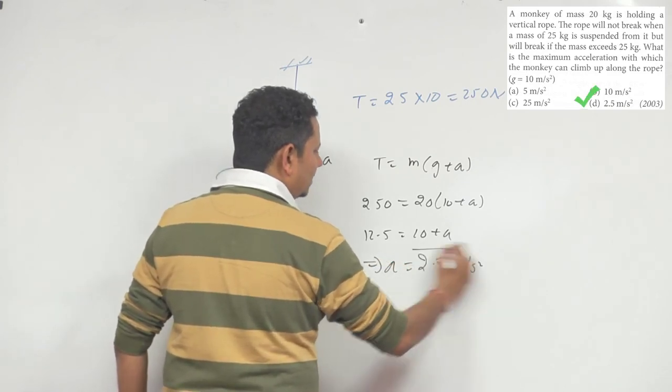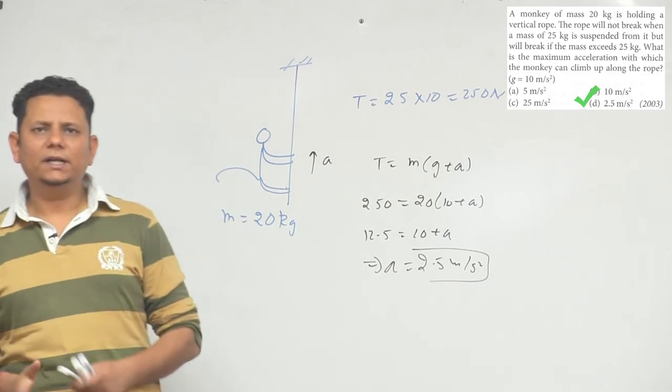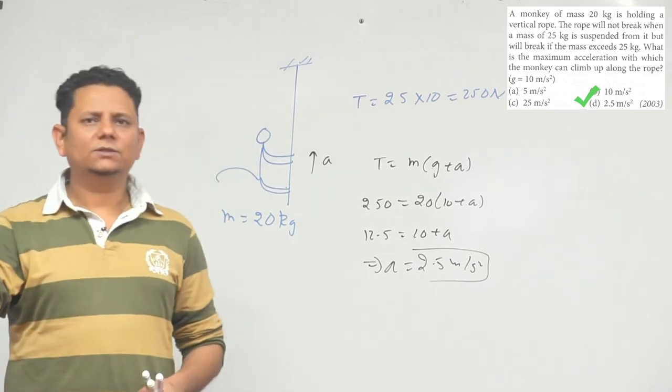So based on this calculation, option number D, 2.5 meter per second square, will be the right answer.